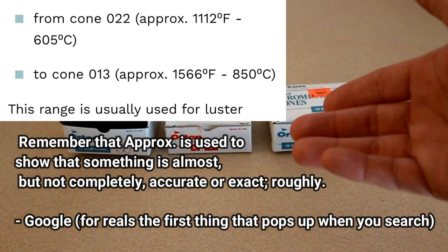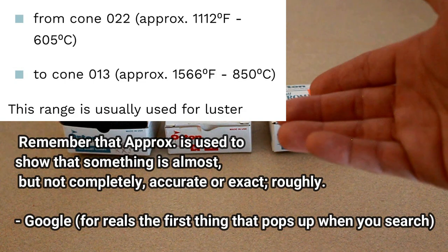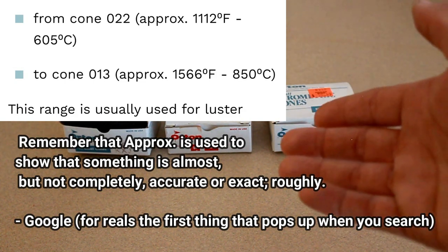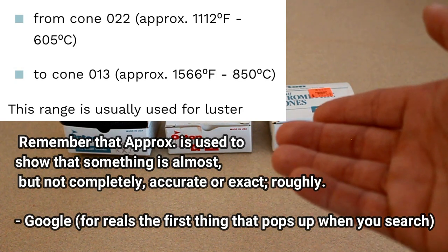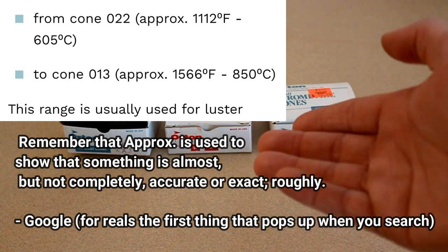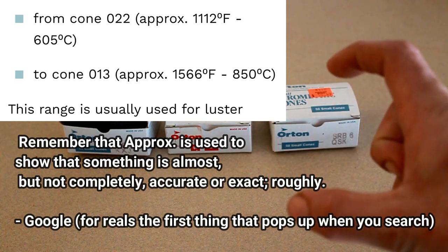Super low fire is anywhere from 022 to 013. It starts at around 1112 degrees Fahrenheit and it goes to 1566 degrees Fahrenheit. Usually this is where a lot of luster glazes are done. So whenever you see one of my videos where I'm doing gold luster, this is about where I do it. I do it at 018 and that's in between these two points.